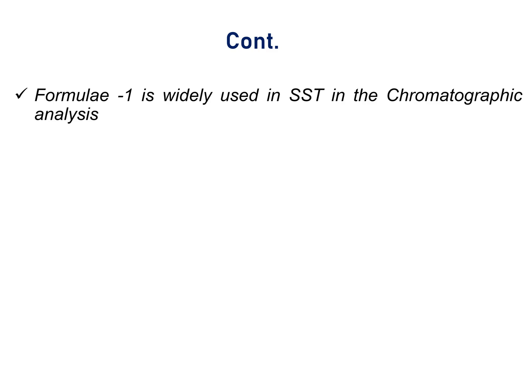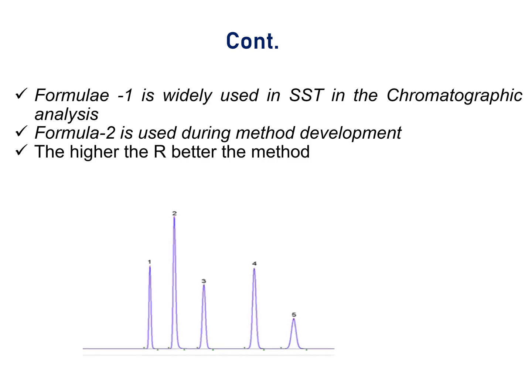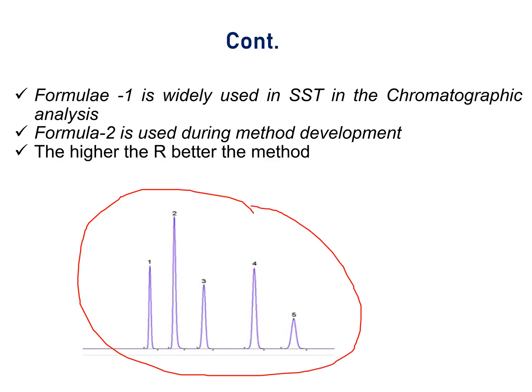Formula 1 is widely used in system suitability in chromatography analysis and routine analysis. Formula 2 is used during method development. The higher the resolution, the better is the method. In this chromatogram, all peaks are well separated — each peak is separated from its adjacent peak.